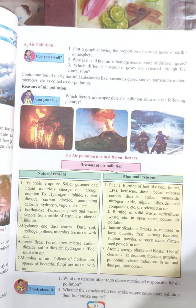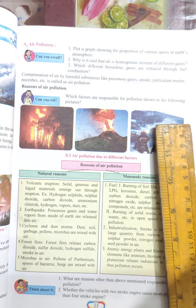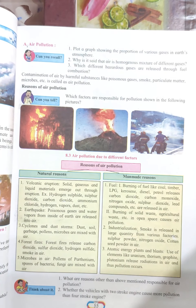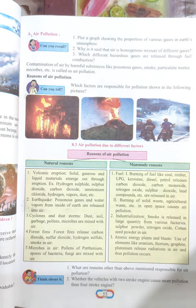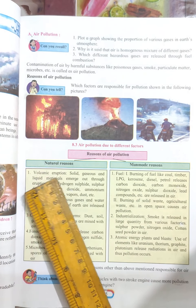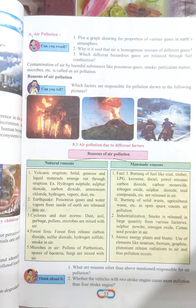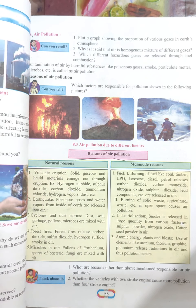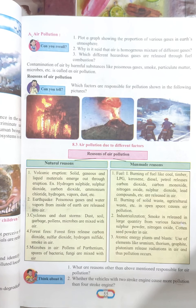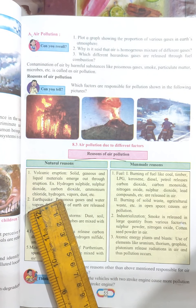What are the reasons for air pollution? There are different pictures — forest fire, volcano eruption. There are natural reasons as well as man-made reasons. First natural reason: volcanic eruption. Solid, gaseous, and liquid materials emerge through the eruption. Harmful gases come out — for example, hydrogen sulfide, sulfur dioxide, carbon dioxide,